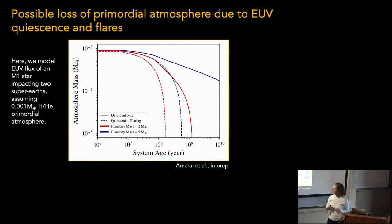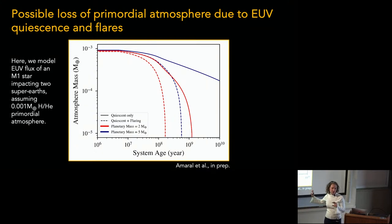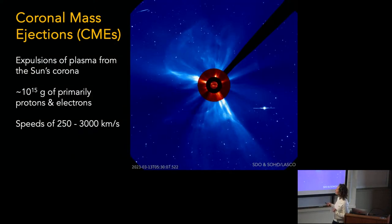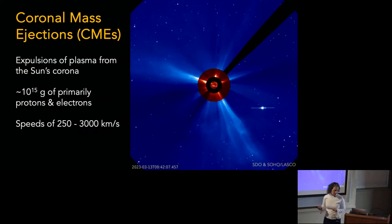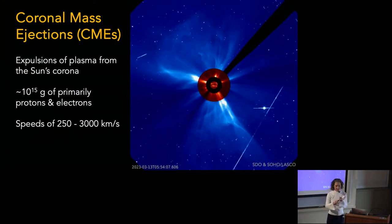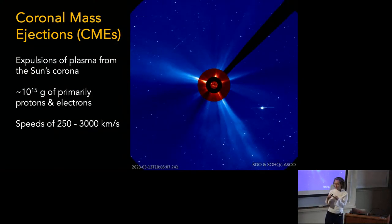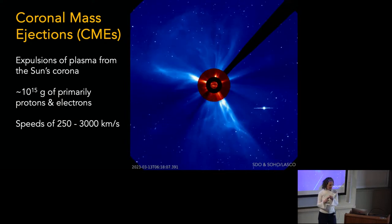At what distance? It's at the habitable zone — Earth in the habitable zone of an M1 star. So that's the quiescent we talked about, that's the flares we talked about, and now we're going to talk about the particles.